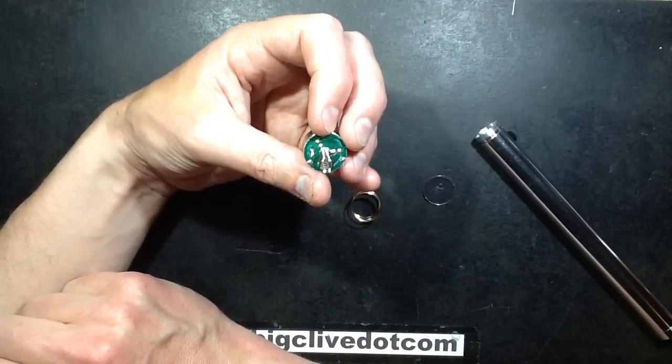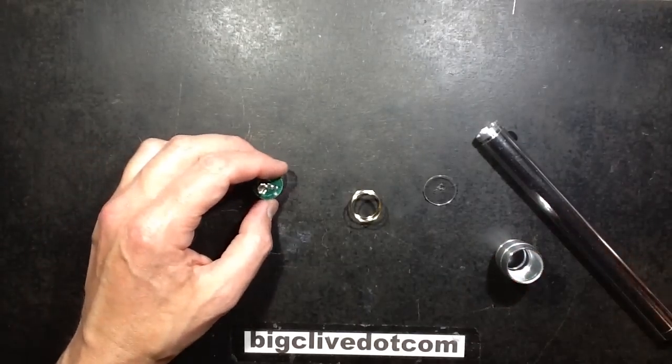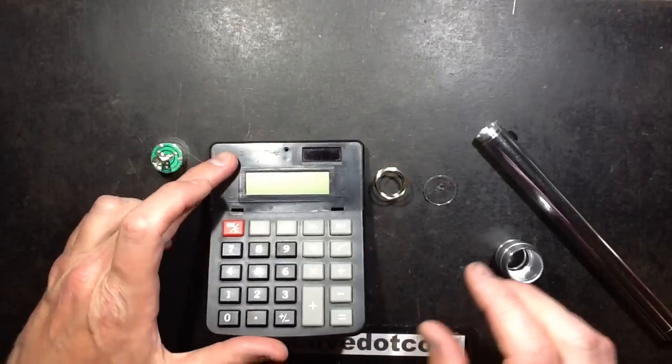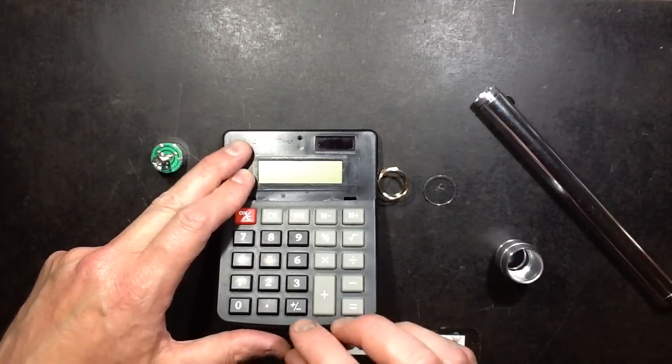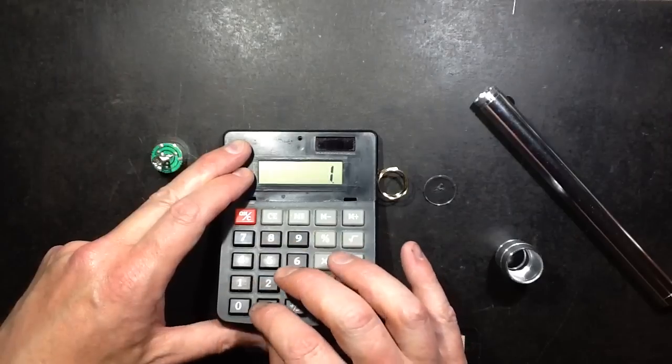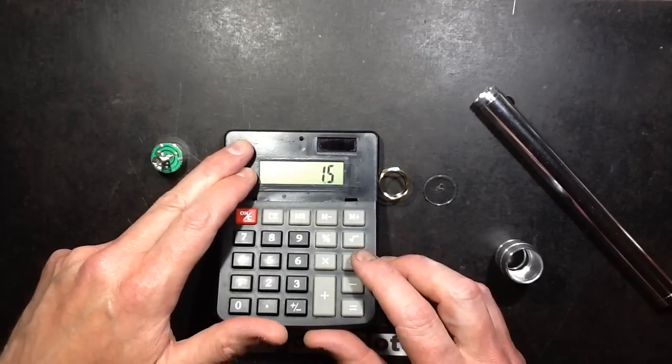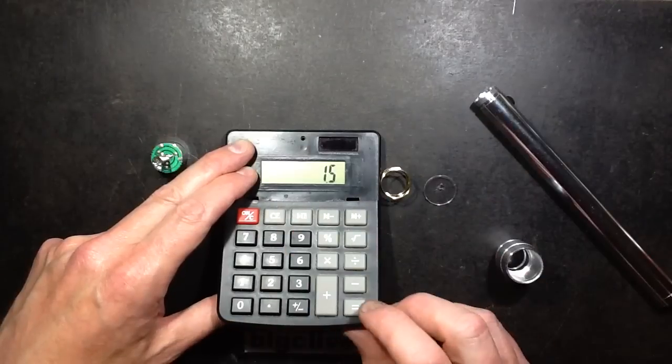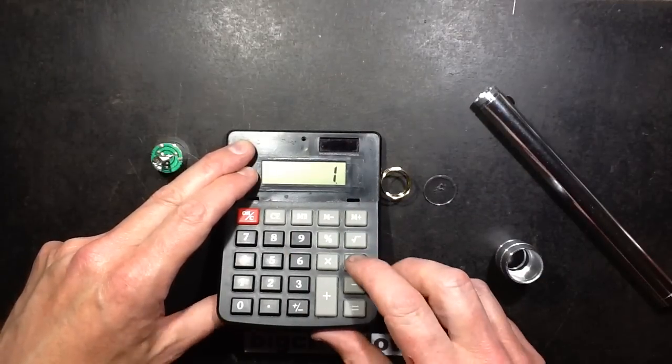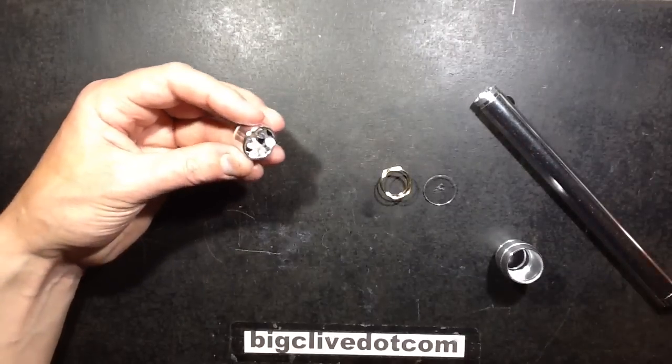If you consider that the LEDs are typically about 3 volts forward voltage and the battery, a fresh set of batteries will be 4.5 volts, that's 1.5 to drop, divided by I equals V over R, which is also 1.5. It's going to pass an amp, and divided by 3, that's going to be hundreds of milliamps these LEDs are being run at.